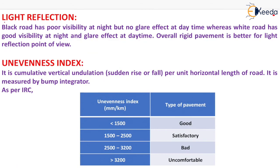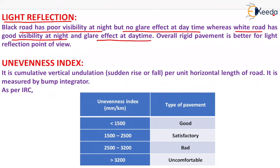The next topic is light reflection. A black road has poor visibility at night but no glare effect at daytime, whereas a white road — that is, rigid pavement — has good visibility at night and a glare effect at daytime. Taking all parameters into account, overall rigid pavement is better from a light reflection point of view.